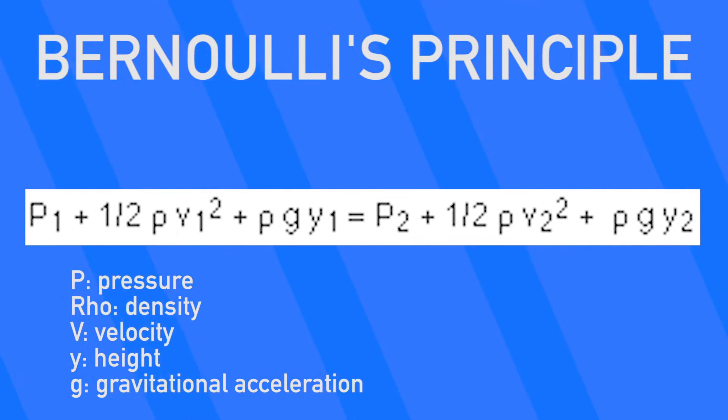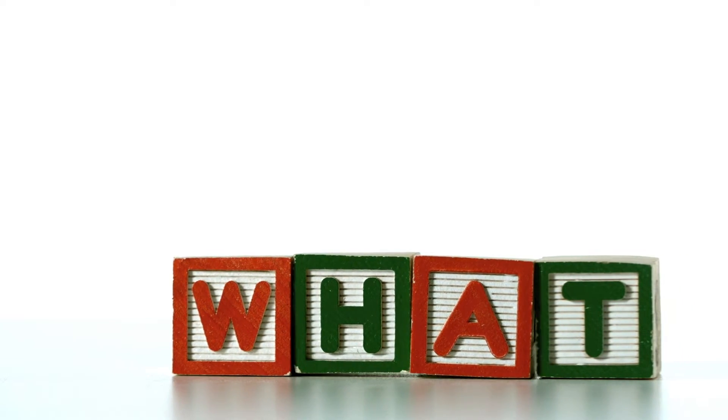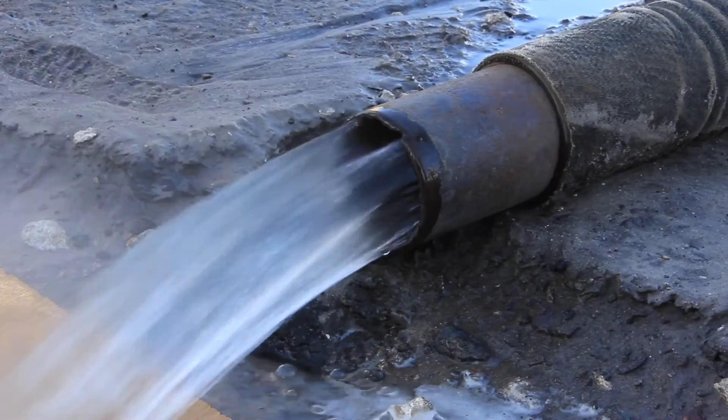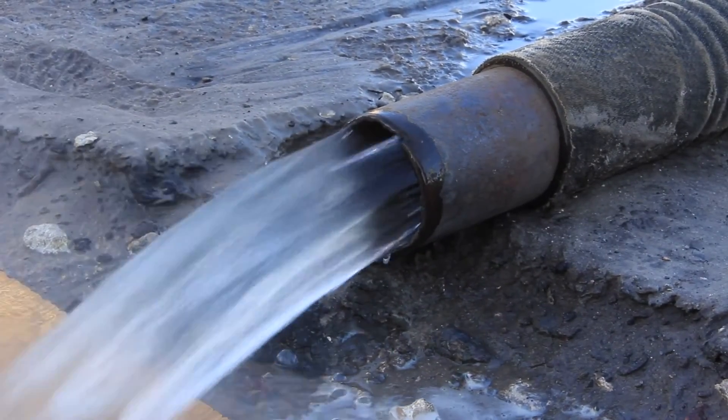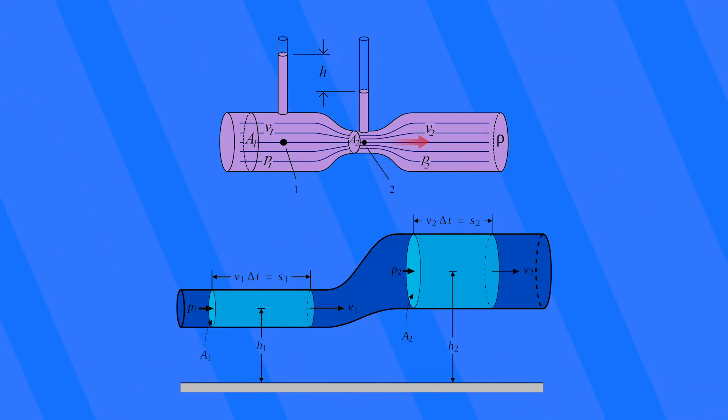Utilizing this equation, you can essentially do some algebra and some calculus to solve for any one of these variables. This is incredibly helpful to engineers in calculating any number of things. But what's interesting about this equation? Well, let's consider a fluid flowing through a horizontal pipe. If the pipe is narrower at one spot, the continuity equation implies that the velocity of the fluid is greater at the narrow section. So, is the pressure higher or lower in the narrow section where the velocity is higher?